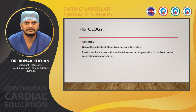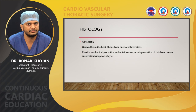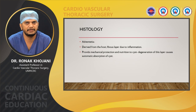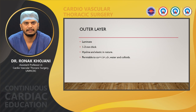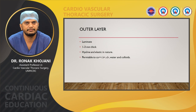Regarding histology, the cyst has three layers: adventitia, laminated membrane, and inner germinal layer. The adventitia is derived from the host and is a fibrous layer formed due to inflammation. It provides mechanical protection and nutrition to the cyst, and degeneration of this layer causes automatic absorption of the cyst. The middle layer is the laminated layer, which is 1 to 3 mm thick, pliable and elastic in nature, and permeable to calcium, potassium, chlorine, water, and colloids.